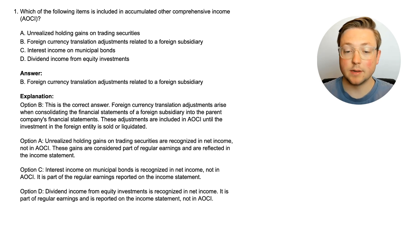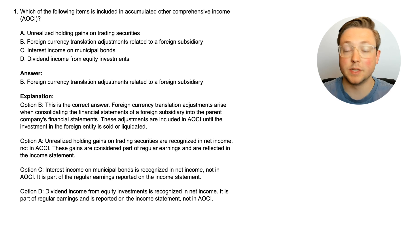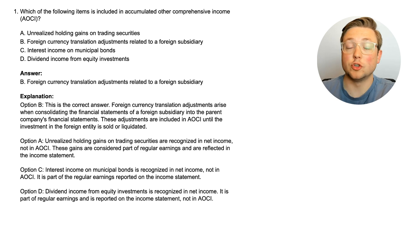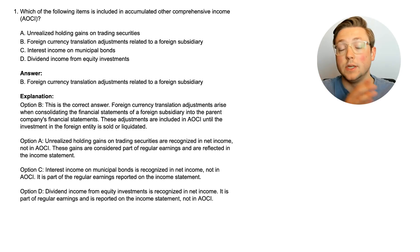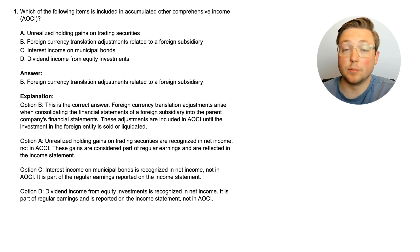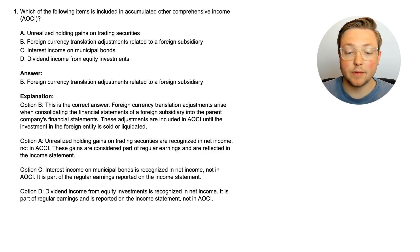Foreign currency translation adjustments arise when consolidating the financial statements of a foreign subsidiary into the parent company's financial statements. If you have a foreign entity that's a subsidiary and they do their business in one currency, you have to translate that into the currency of the parent company — for example, from euros to dollars. These adjustments are included in AOCI until the investment in the foreign entity is sold or liquidated.